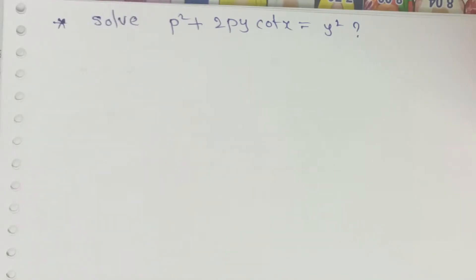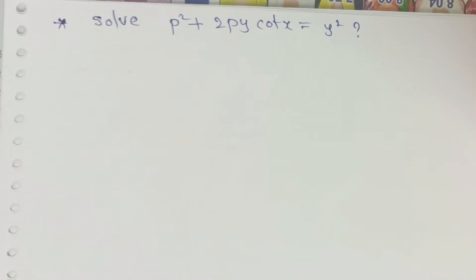Hi dear students, welcome to GNJ Mass Hub. I am going to take a degree first year, first semester, unit 2 — Solvable for P, most important problem, which we will discuss in today's class.